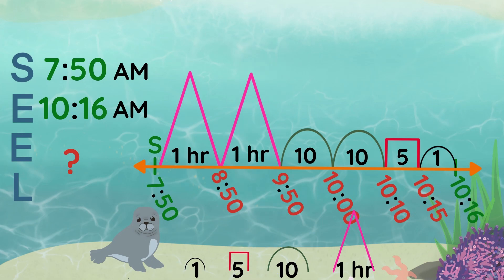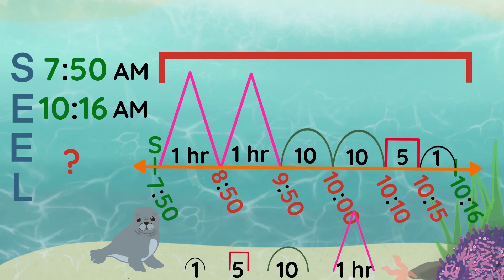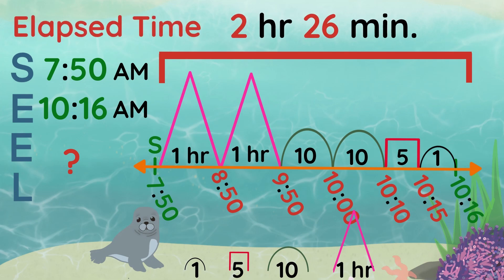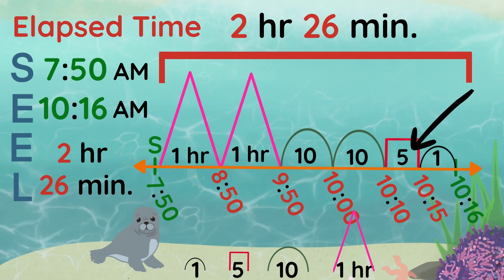Now that I've labeled each hop, I can add the mountains, hills, rocks, and pebbles together to get the time in between. The elapsed time is 2 hours and 26 minutes. If remembering mountains, hills, rocks, and pebbles is hard for you, not to worry — just be sure to label each jump on top and the new time below.